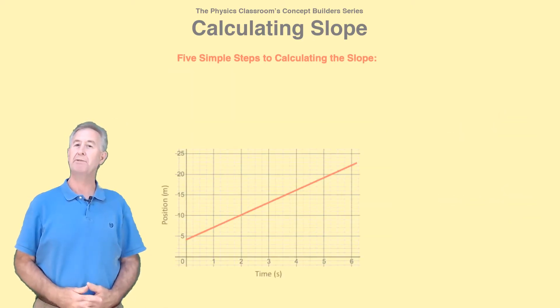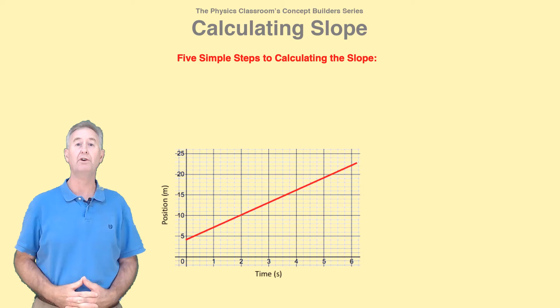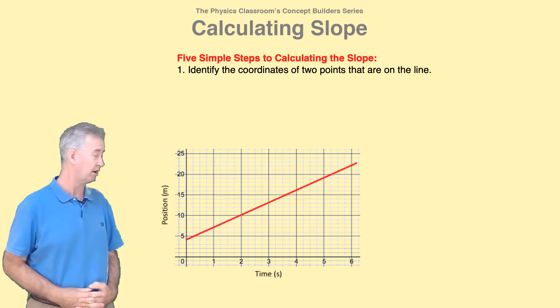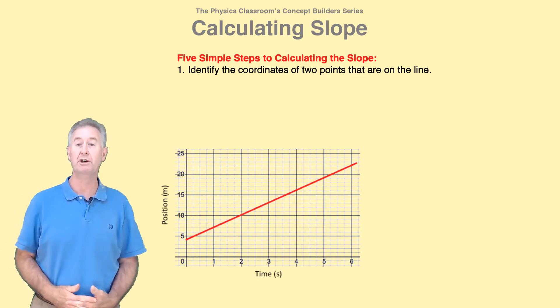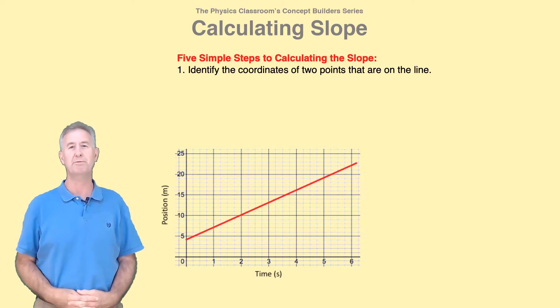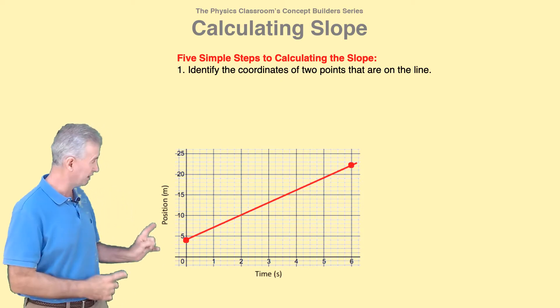Let me demonstrate a simple five-step process for calculating the slope. The first step involves identifying the coordinates of two points on the line. Pick points that are on the line whose coordinates are clearly known. Avoid estimation.